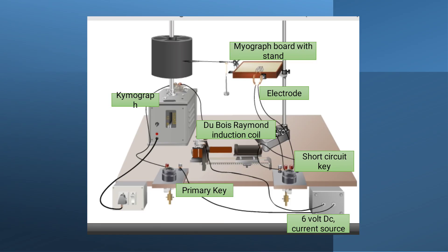Some instruments are related to the electrical stimulus — for example the Dubois-Reymond induction coil, current source, primary key, and short circuit key. Some instruments in this setup are recorders — for example the kymograph. And some instruments are miscellaneous, like the myograph board with the stand.